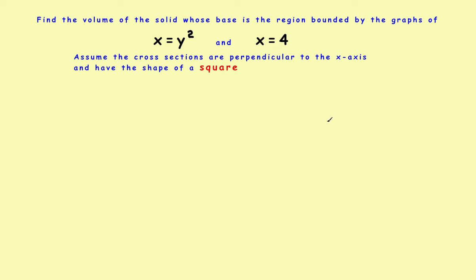Let's look at the first problem. Find the volume of a solid whose base is the region bounded by x equals y squared and x equals 4. The cross-sections are perpendicular to the x-axis and have the shape of a square.